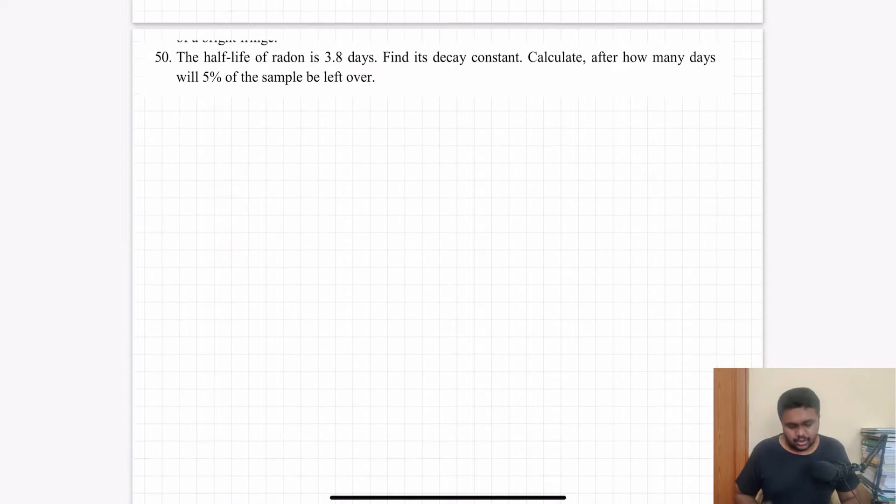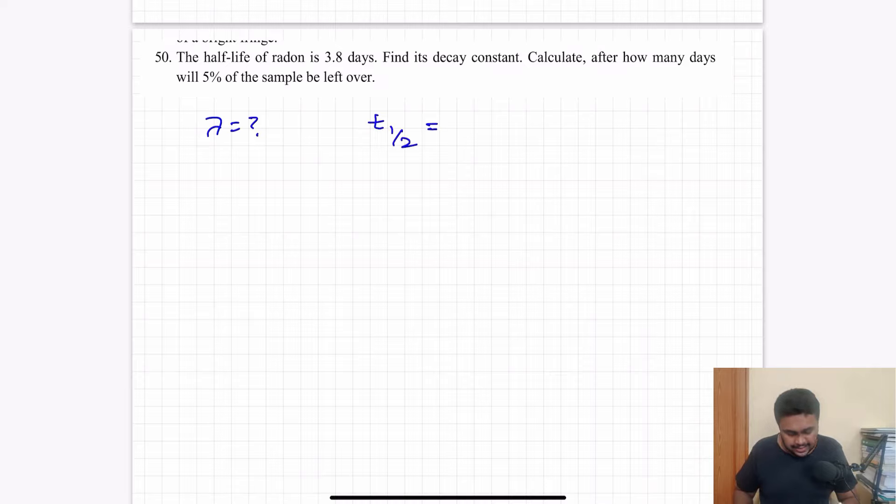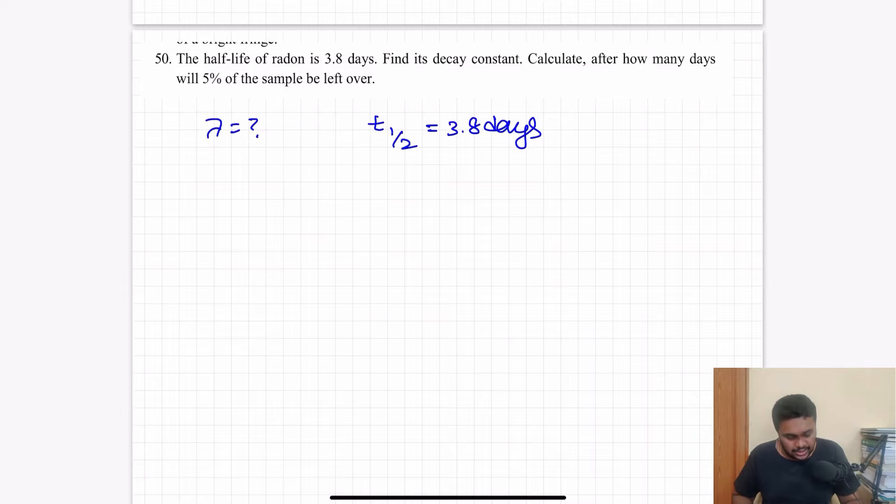Nuclei chapter. The half-life of radon is 3.8 days. Find its decay constant. Calculate after how many days will 5% of the sample be left over. First, to find the decay constant. They have given half life equal to 3.8 days.